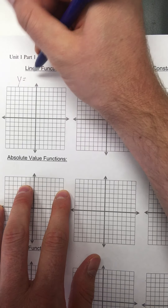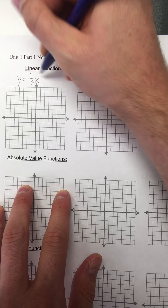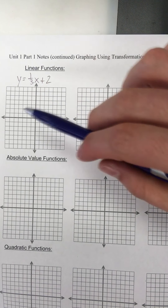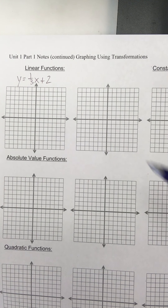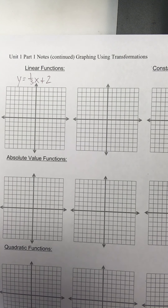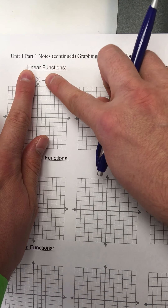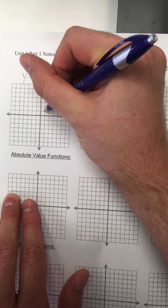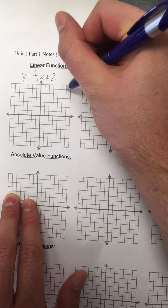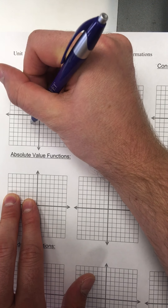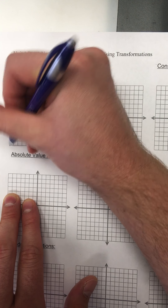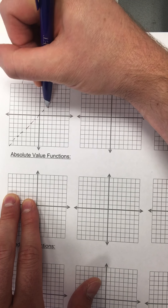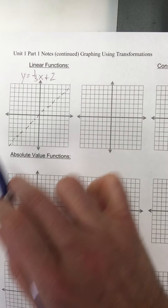If I needed to graph y equals one-third x plus two — first of all, I know it's linear, it doesn't have any squared exponent or absolute value bars. So it's going to make a line. Let's just start with our parent function. If this one-third and the two weren't here, my parent function would start at (0,0) and go up one over one. That's not the final answer — this is the parent function, drawn as a reference.